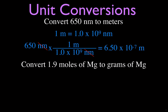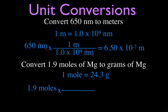Finally, a chemistry example: convert 1.9 moles of magnesium to grams. From the periodic table, the molar mass of magnesium is 24.3 grams per mole. Write down 1.9 moles, put one mole in the bottom, 24.3 grams on top. Multiply: 1.9 times 24.3 equals 46.2 grams. This makes sense — it's almost two moles, and two moles would be about 48.6 grams.